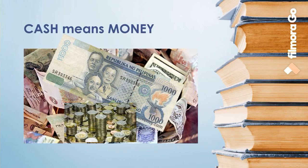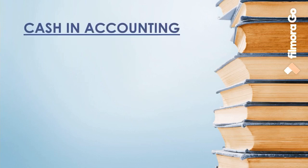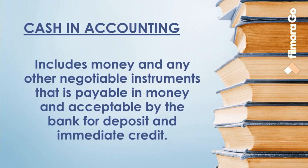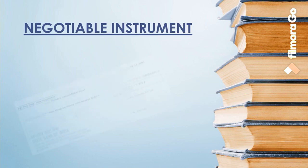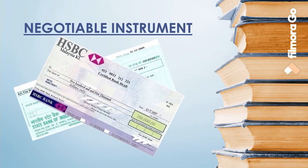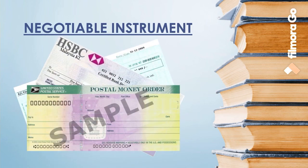The bills and coins in circulation must be legal tender to be acceptable for exchange. However, in accounting, the term cash has a broader meaning. It not only includes money but also includes negotiable instruments that are payable in money and acceptable by bank for deposit and immediate credit. Accordingly, cash includes checks, bank drafts, and money orders.